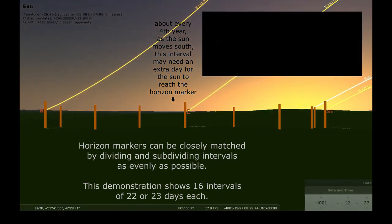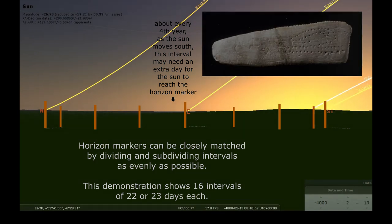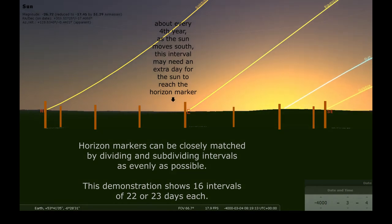It is likely a tally stick of some kind would be kept as well, but horizon markers alone could show interval progress of the year once the system was established, including leap year adjustments.